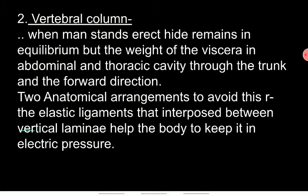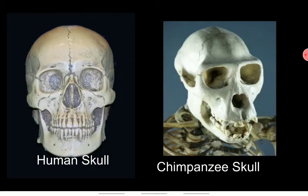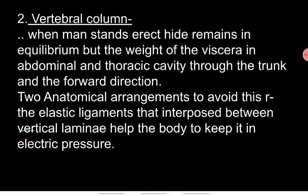There are also changes in the skull in the supra-orbital region, which is a little over the eye. Because our maxilla and mandible are reduced and the mouth is inside, the supra-orbital region is less pronounced in comparison. These are major changes in the human skull.